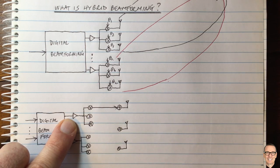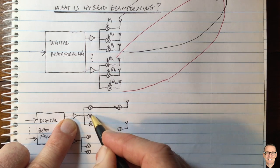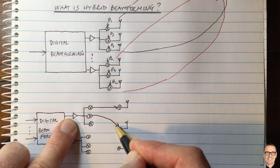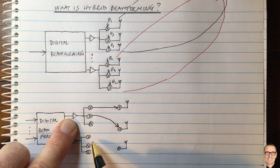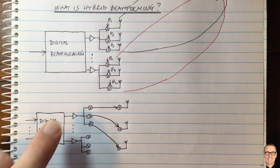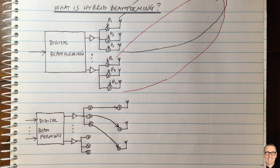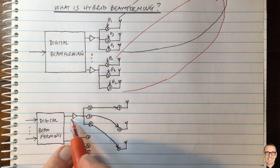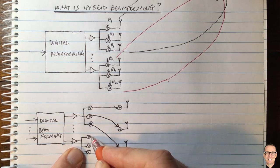So the first output goes to the first antenna, the second output goes to the second antenna where there's some circuitry to add the signals, and the third one goes to the third antenna. And then we could do the same thing, I mean these are dot dots here so let's look at the last one.